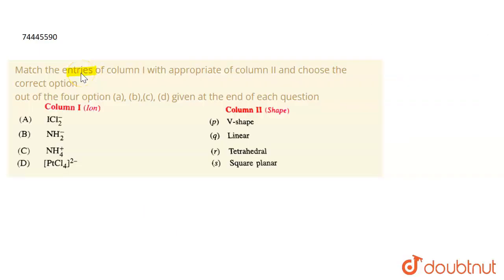Match the entries of column 1 with appropriate entries of column 2 and choose the correct option out of the 4 options given at the end of each question. You have column 1 and column 2. In column 1, you have given ions, and in column 2, you have given shapes. Then you have to match the ions to shapes.